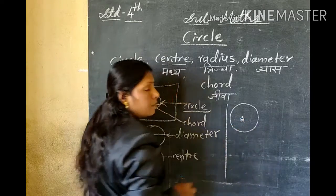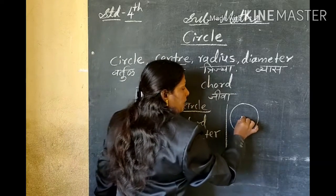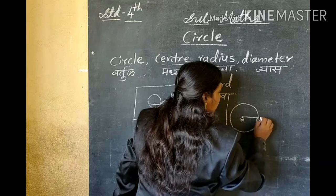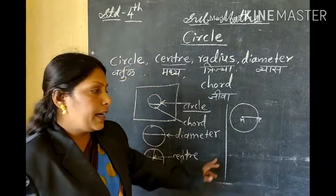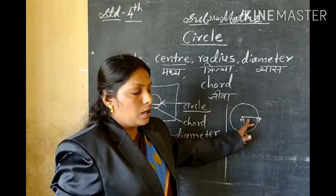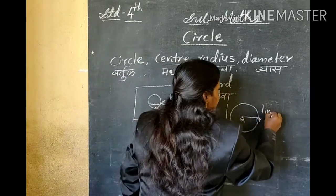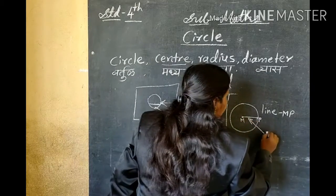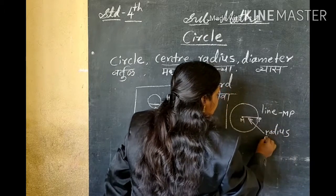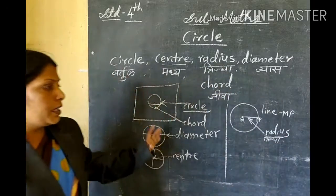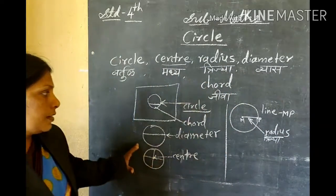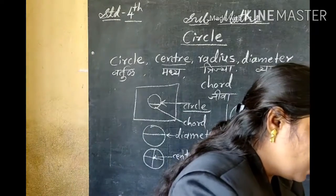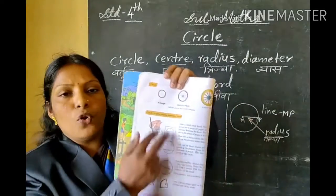The center point M to point P — this line MP is called the radius. Page number four — this is page four.